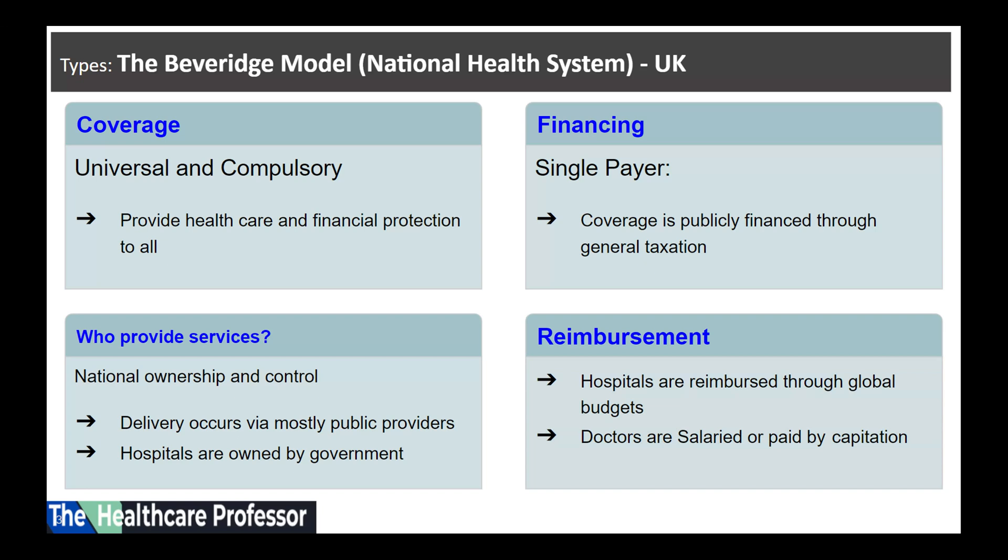Healthcare in this system is free at the point of use. Hospitals are reimbursed through global budgets — a fixed amount of money over a certain period. Doctors are salaried or paid by capitation. The Veterans Health Administration system in the United States is very similar to the Beveridge model: it universally covers all beneficiaries, is financed by taxes, the payer is the government, services are provided by the government, and providers are reimbursed through global budgets and salaries.